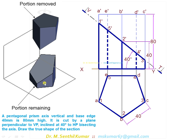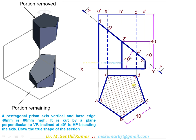The sectional top view is not the true shape. Hatch the entire area of the apparent section. The hatching lines should be thin continuous line type, equispaced. They should just cover the boundary — if the hatching lines do not reach the boundary it is incorrect, and if they cross the boundary it is also incorrect. The apparent section is now complete.